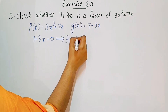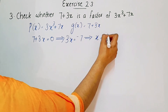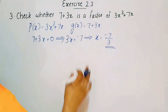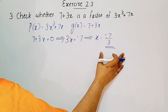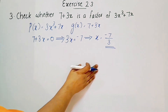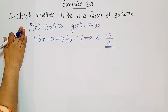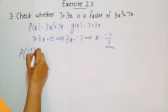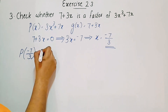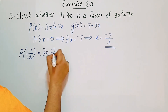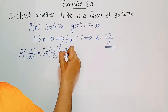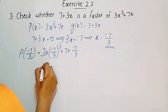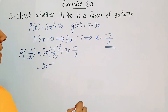We set 3x equal to negative 7, so x equals negative 7 by 3. We substitute x equals negative 7 by 3 into p of x: p(−7/3) equals 3 times (−7/3)³ plus 7 times (−7/3).